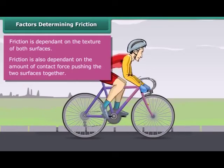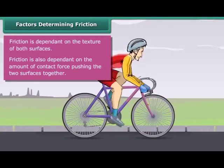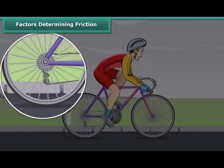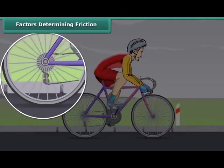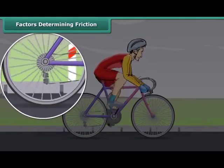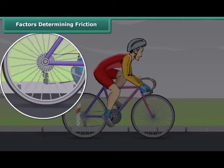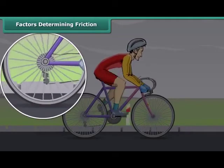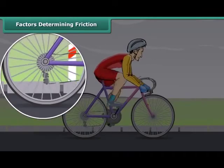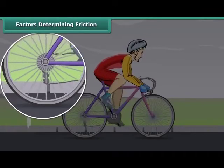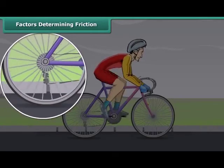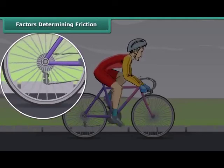While in motion, the tires of the bicycle are rubbing against the surface of the road. When two surfaces rub on one another, a force comes into play. This force acts in the direction opposite to the direction of motion, thus slowing down the motion and finally bringing the moving object to a stop.